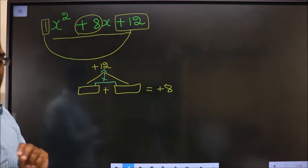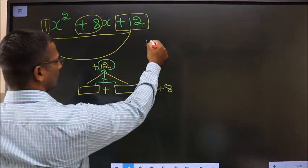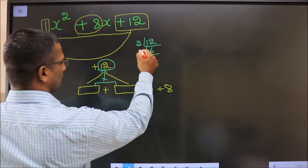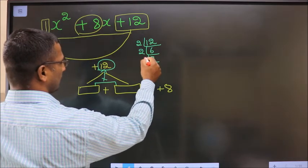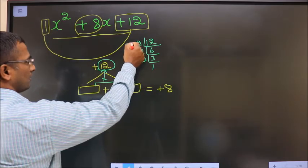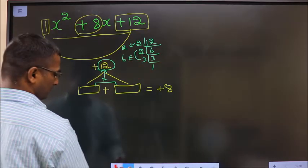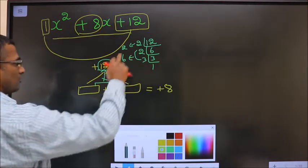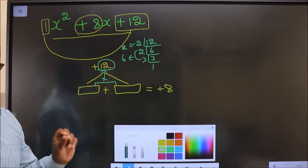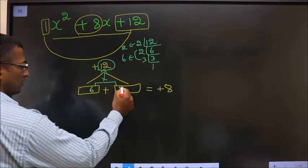How do you get those two numbers? By taking the LCM of 12. So it is 2, 6, 2, 3, and 3, 1. The two numbers will be: the first is 2 and the second number will be 2 into 3, which is 6. 6 into 2 is 12, and 6 plus 2 is 8. Clear with the two numbers? So write them here: 6 and 2.